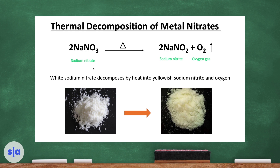Let's check the balance of the sodium nitrate equation. On the left side: 2 sodium, 2 nitrogen, and 6 oxygen (2 × 3). On the right side: 2 sodium, 2 nitrogen, and 4 oxygen (2 × 2) plus 2 oxygen, totaling 6. So this is a balanced equation.